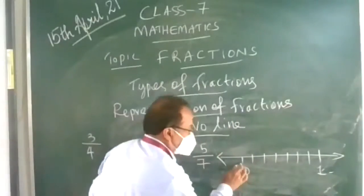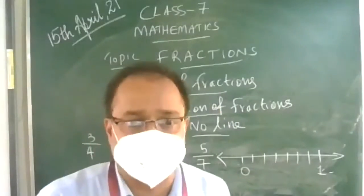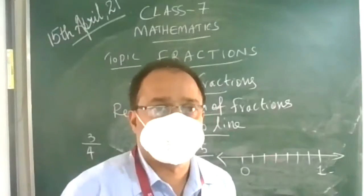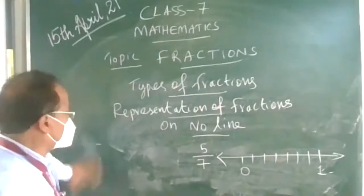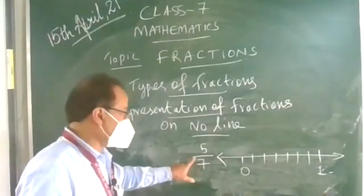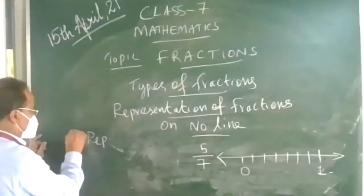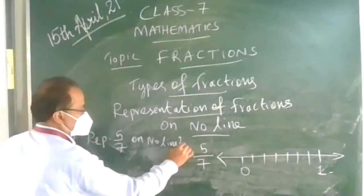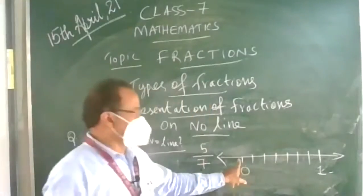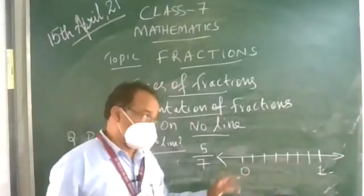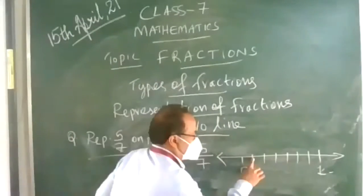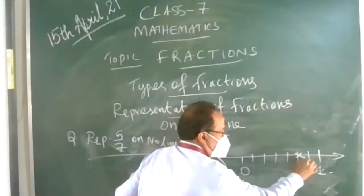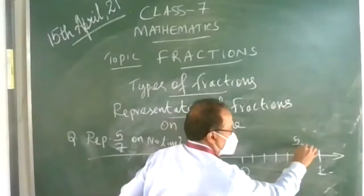Draw the segment and represent 0 and 1 on the number line. Between 0 and 1, divide it into 7 equal parts. Why 7? Because the denominator is 7. Now, start counting to the 5th part: 1, 2, 3, 4, 5. Mark this point with a pencil or pen in a different color. This is 5 upon 7.